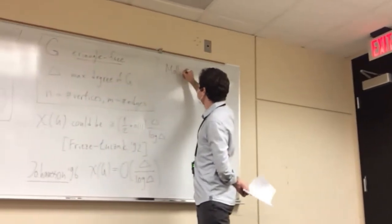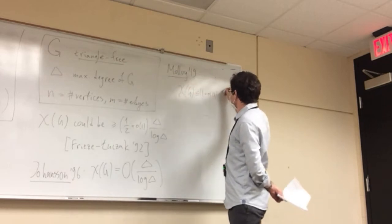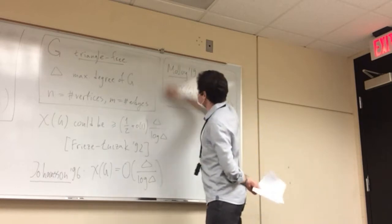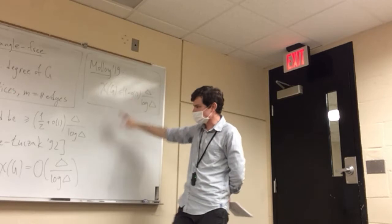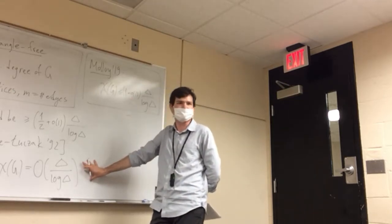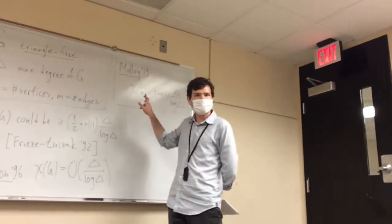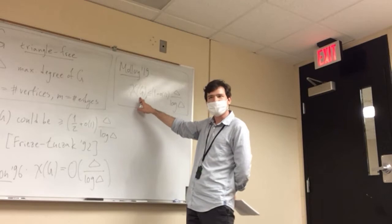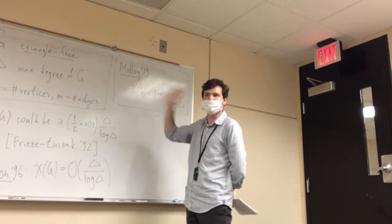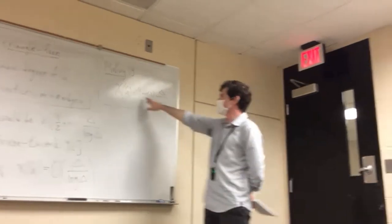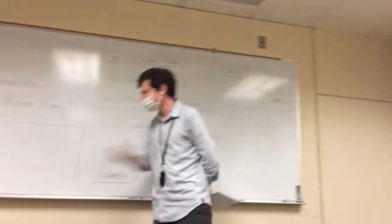Until very recently, Molloy in 2019 in a breakthrough paper argued that you can reduce the constant all the way down to one — and this is the best currently known bound. This was remarkable because the methods in Johansson's original proof had been pushed to their limit and could not reduce the constant to one. There is still a gap of a factor of two between the constants, and we don't even know that triangle-free graphs have large enough independent sets to be colored with fewer colors.